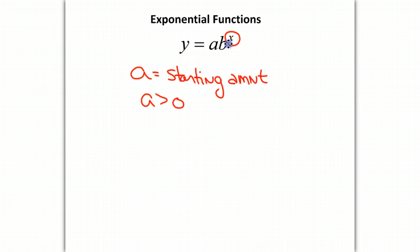B is our growth factor, and we're going to put the same restriction on b, that b will always stay greater than 0. B cannot be a negative number, and b cannot equal 1. Your teacher or another video will explain why these restrictions exist, but we're just going to talk about what these functions look like.